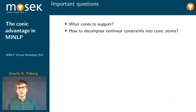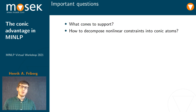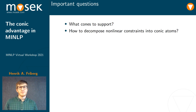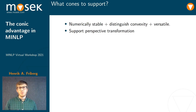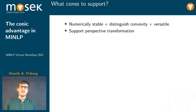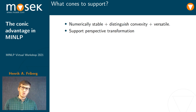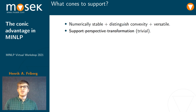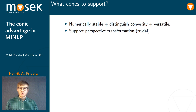So the important question here is: what cones to support, and how to decompose nonlinear constraints into conic atoms. To address the first question, we already know that cones should be numerically stable, distinguish convexity, and versatile. We also mentioned that atoms should support perspective transformation, but this is trivially satisfied now that we're dealing with cones. So where to begin from these three properties?